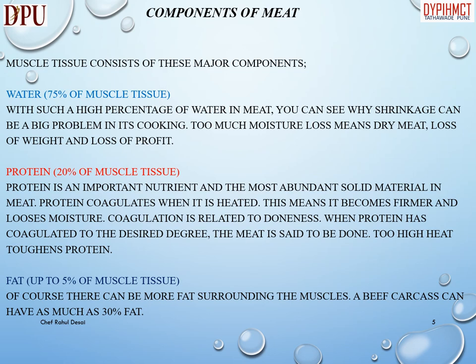Protein makes up 20% of muscle tissue. Protein is an important nutrient and the most abundant solid material in meat. Protein coagulates when it is heated, meaning it becomes firmer and loses moisture. Coagulation is related to doneness — when protein has coagulated to the desired degree, the meat is said to be done. Too high heat toughens protein. Fat makes up to 5% of muscle tissue; of course there can be more fat surrounding the muscles, and a beef carcass can have as much as 30% fat.